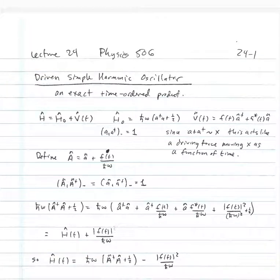Welcome to lecture 28. Today we're going to talk about an exact time-ordered product that we can calculate. One of the things that you have probably noticed as we've been talking about time-ordered products is that we can formally write down an equation for what the time-ordered product is, but actually determining analytically what a given time-ordered product will be is a rather challenging problem to work out.